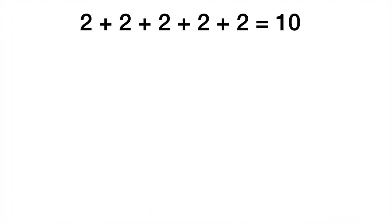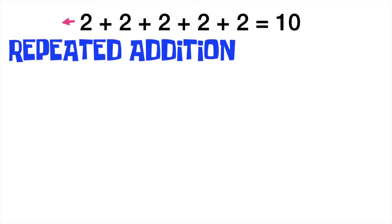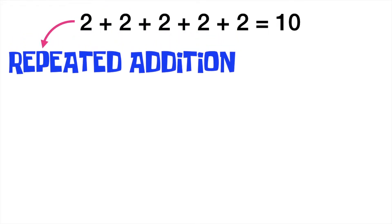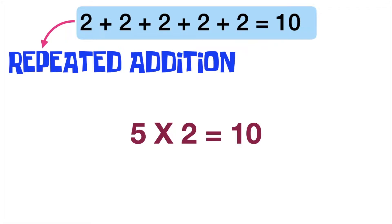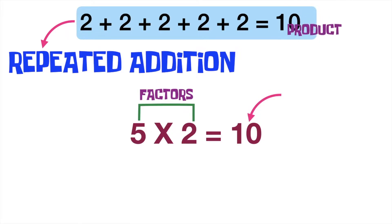Again, children, this process is what we call repeated addition. Instead of doing repeated addition, we can simply do multiplication, such as 5 times 2 is equal to 10, wherein 5 and 2 are what you call the factors, and 10 is the product. Factors are the numbers that you multiply, and the product is the answer in multiplication.